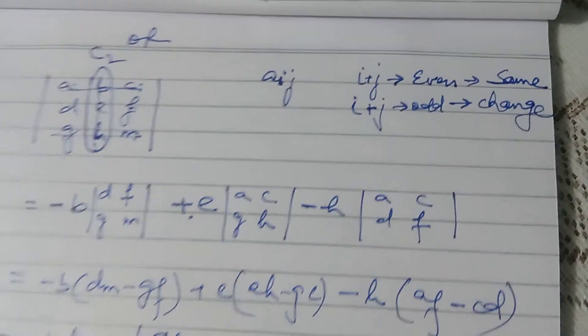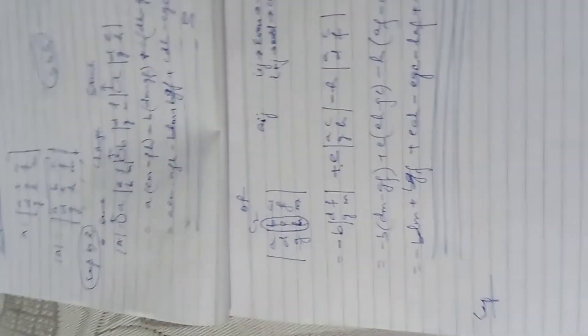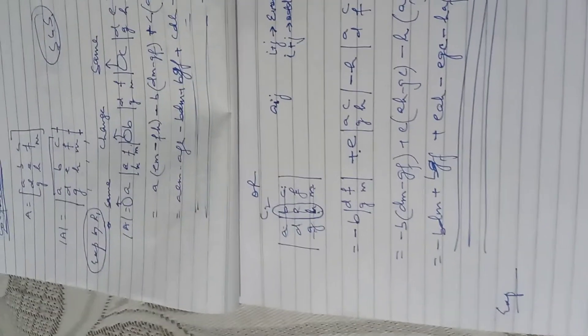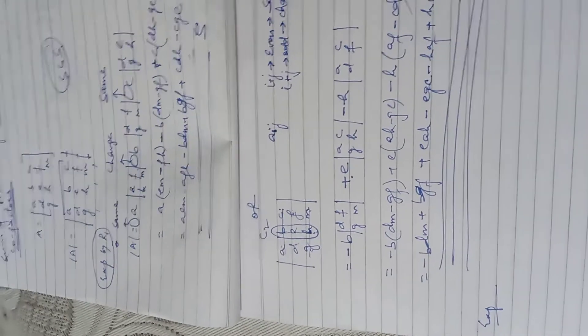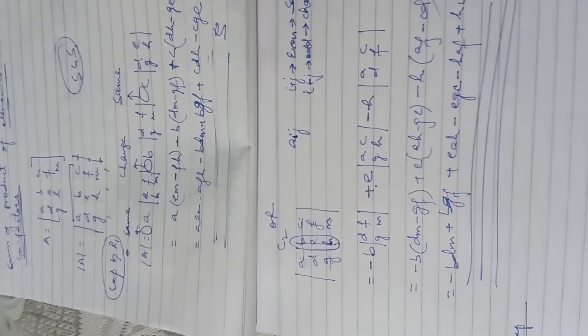In the same way, you can expand by any of the 6 rows or columns — the answer will always be the same. This is the basic rule to expand 3x3 determinants. We will use this expansion for some questions, but generally we will need to use properties of determinants, which have been shared in a document — please go through that and prepare all the properties, and we will discuss them in the next class. If there is any query, please feel free to ask. Thank you so much.